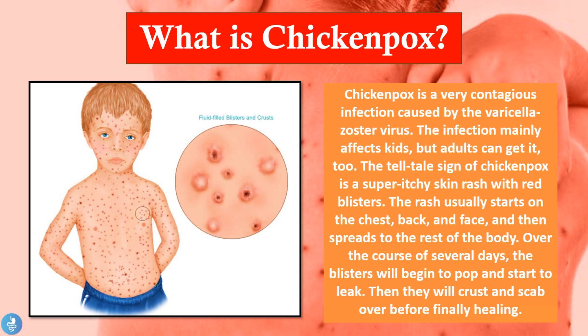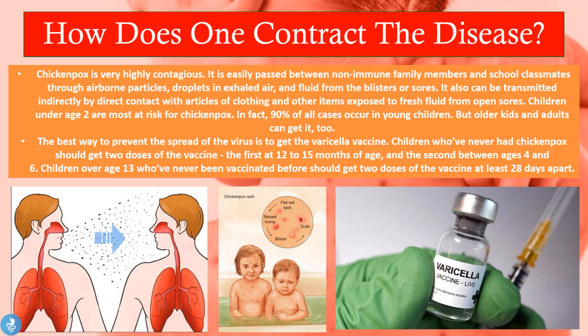Now let's take a closer look at how one can contract this disease. Chicken pox is very highly contagious — it is easily passed between non-immune family members and school classmates through airborne particles, droplets in exhaled air, and fluid from the blisters or sores. It can also be transmitted indirectly by direct contact with articles of clothing or other items exposed to fresh fluid from open sores.